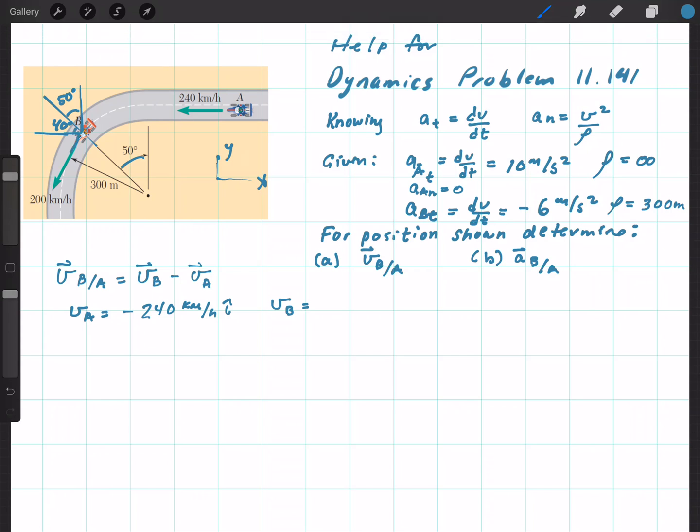Between here and here, this is a right angle. Because this is a tangential component. So if that's a right angle, then we know that if that's 40, then this has to be 50 degrees.